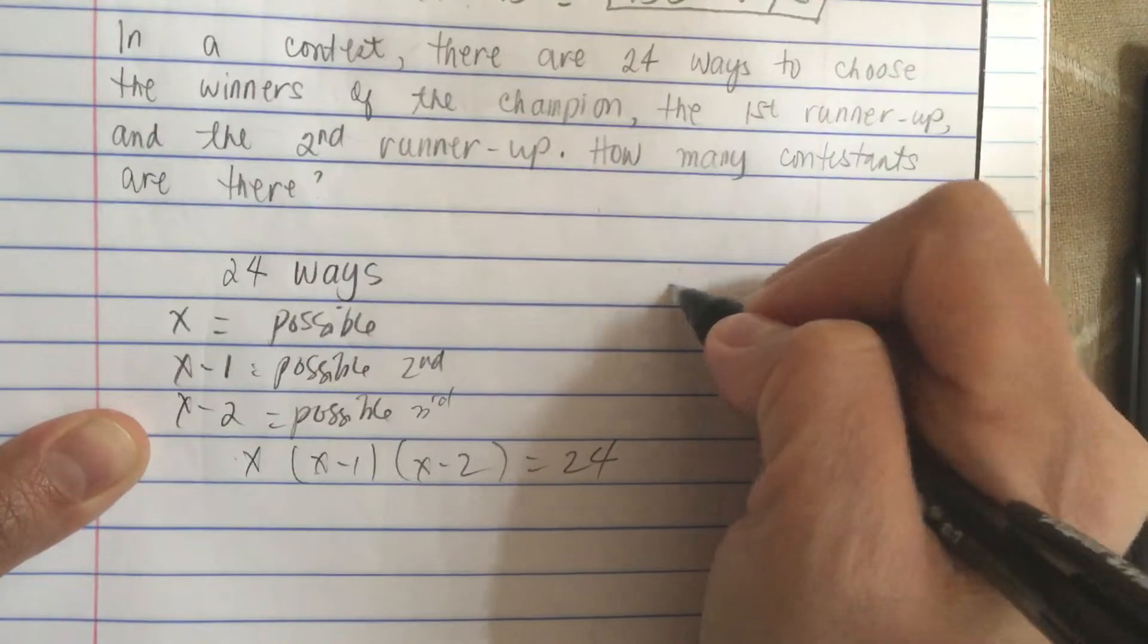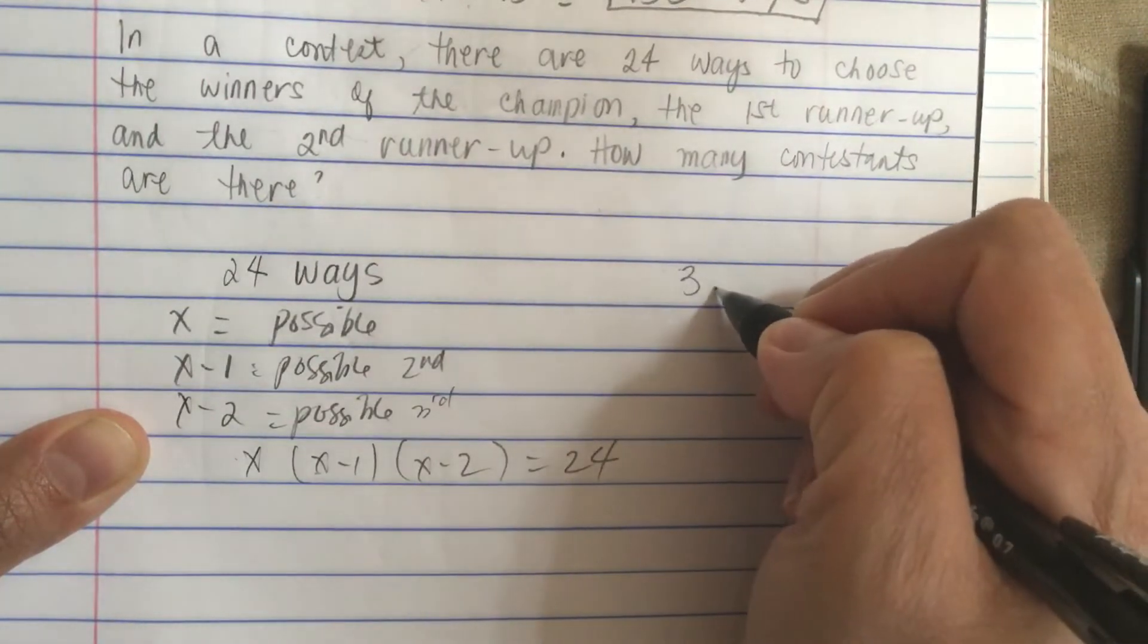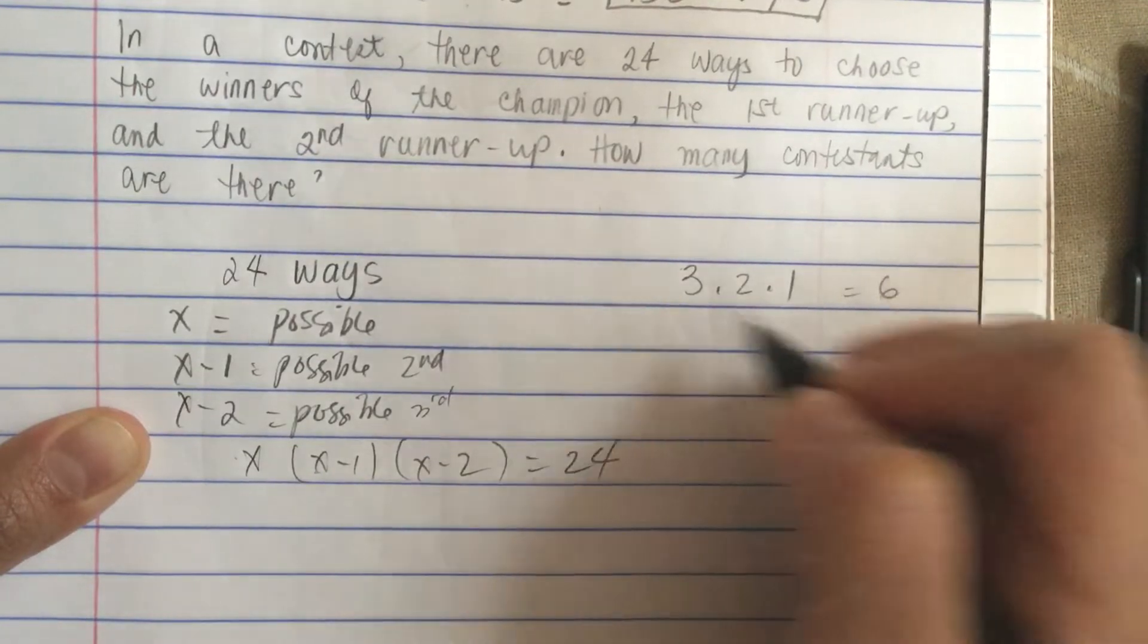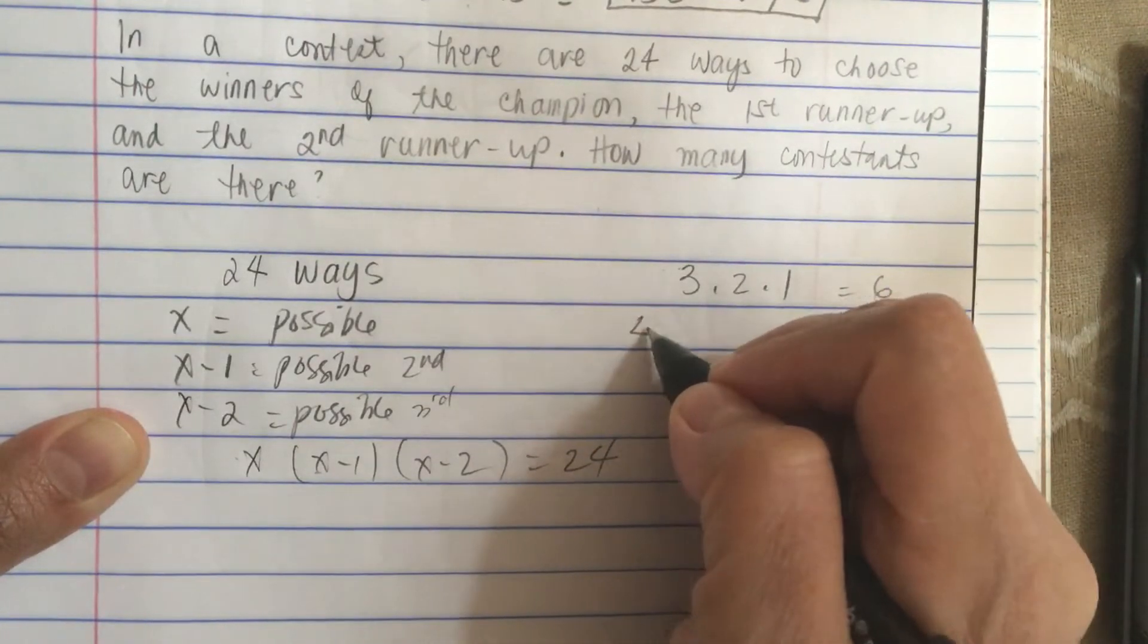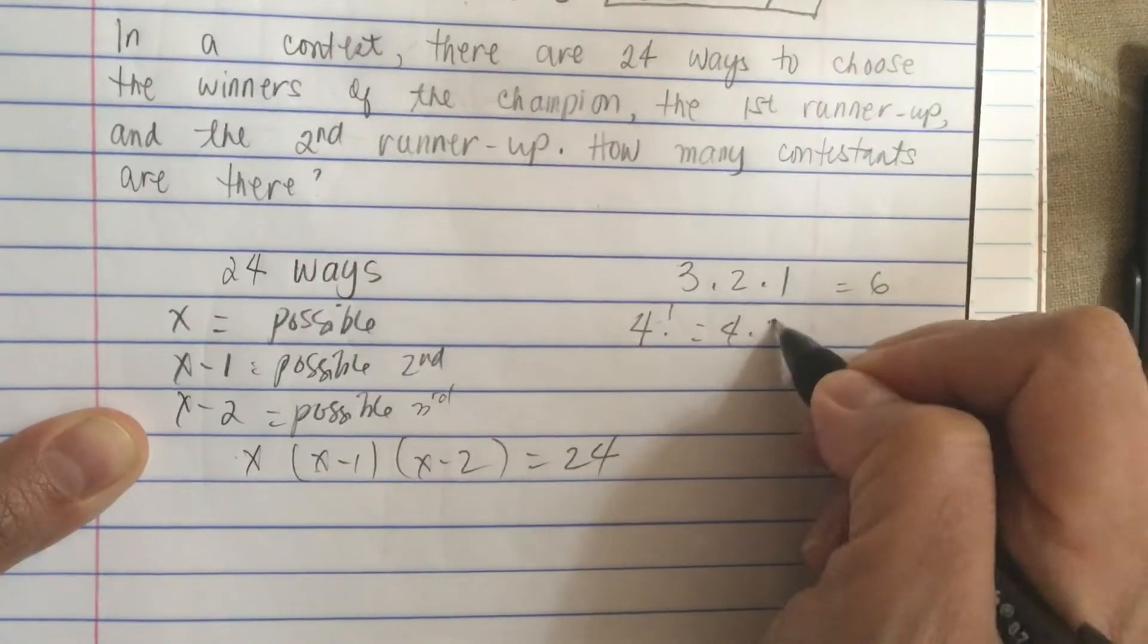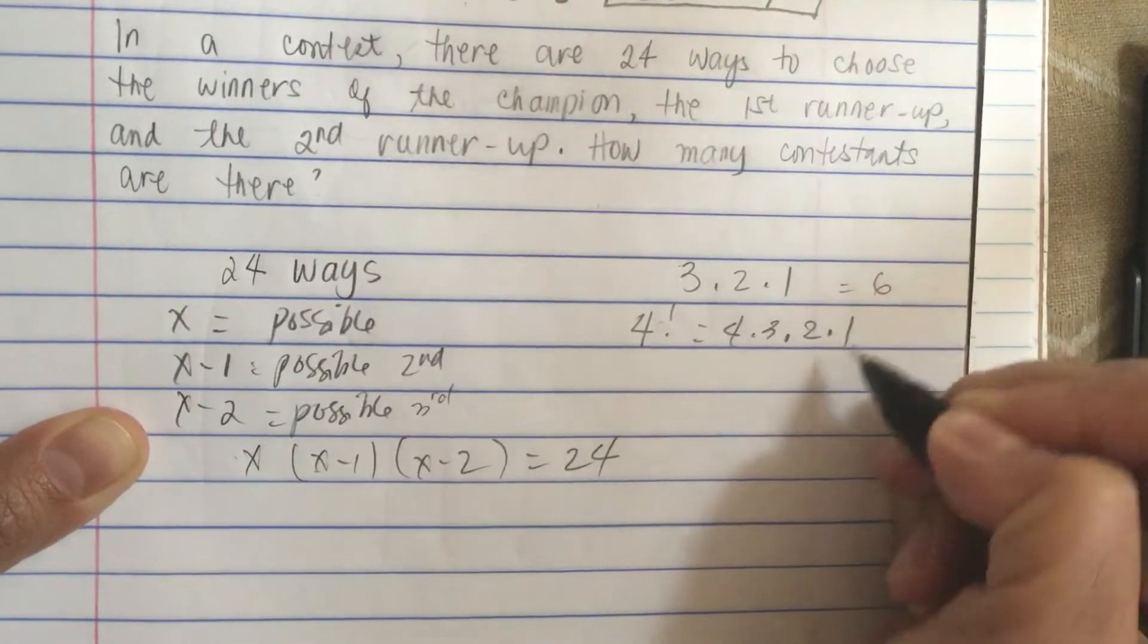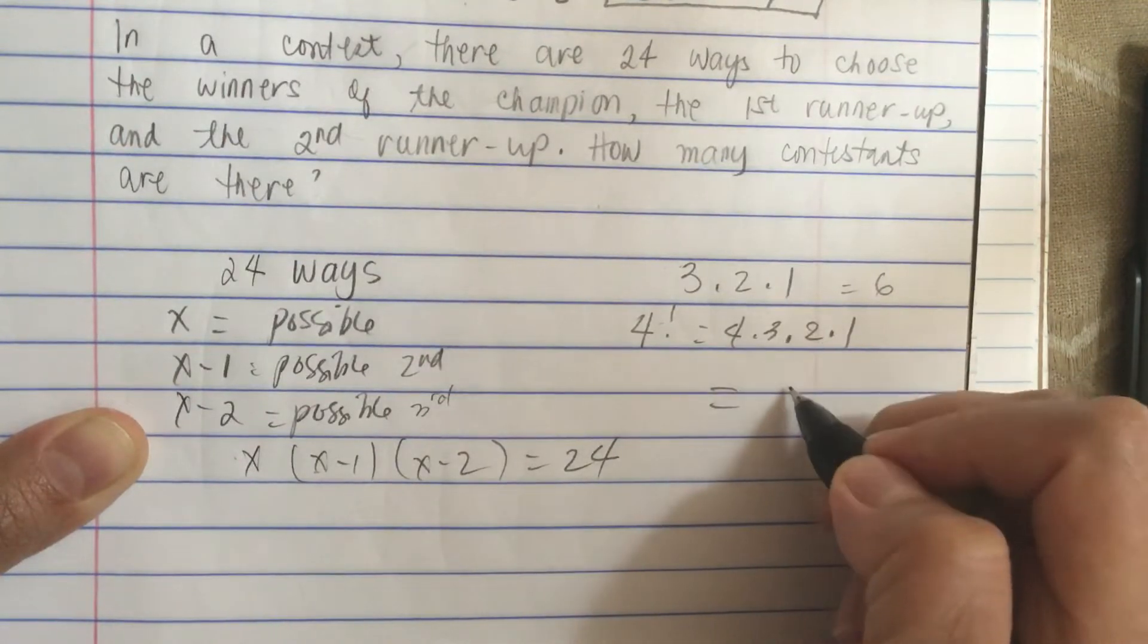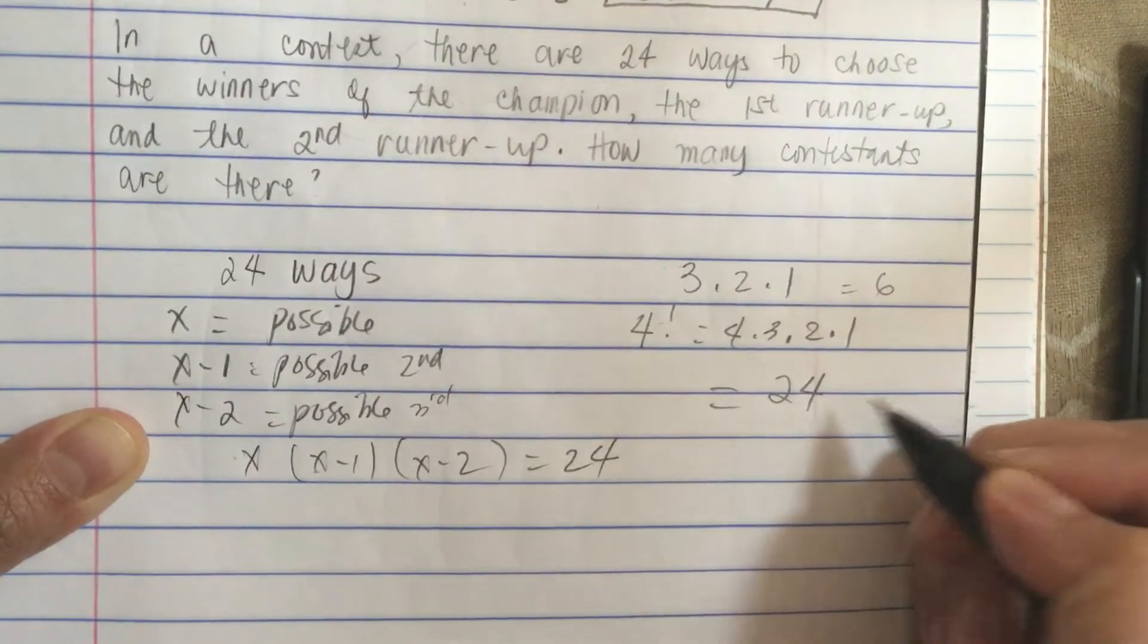So if we do 3 times 2 times 1, this will just give us 6. But if we do 4 factorial, so 4 times 3 times 2 times 1, this will give us 12 times 2 is equal to 24.